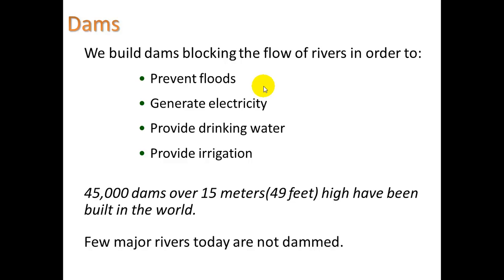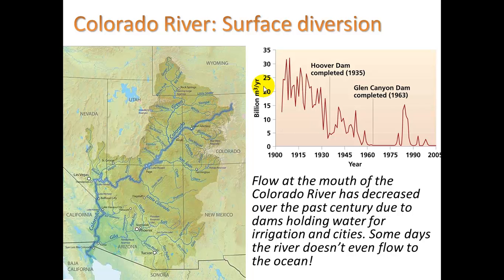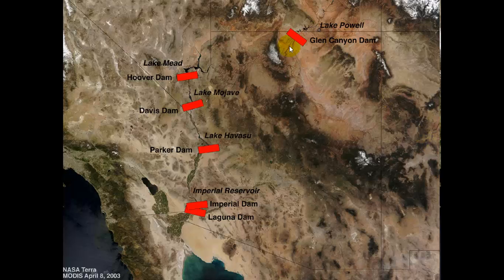A few major rivers today are not dammed, and the Colorado River is one clear example. If you look at the flow rate at the mouth of the Colorado River where it empties into the ocean, back in the early 1900s it was pretty high, but nowadays sometimes it's just a trickle — some years it doesn't even flow all the way to the ocean. Along the way you have several dams: one creates Lake Powell, Hoover Dam creates Lake Mead, then Lake Mojave, Lake Havasu, and more. Much of the surrounding area is irrigation — land where we're growing food using water from the Colorado River.